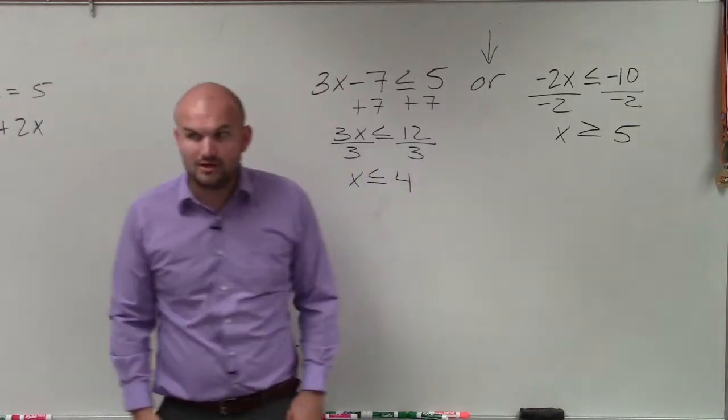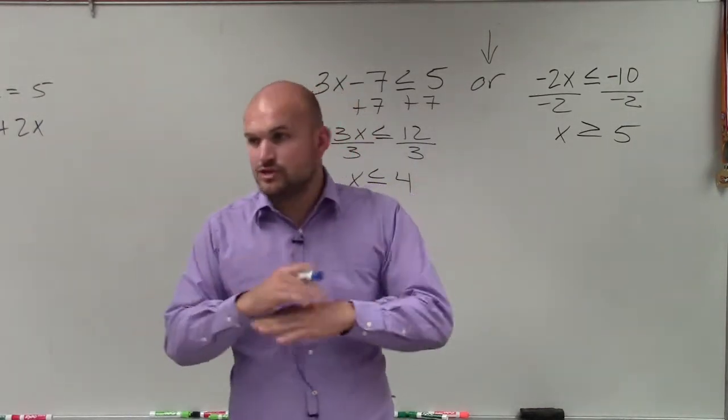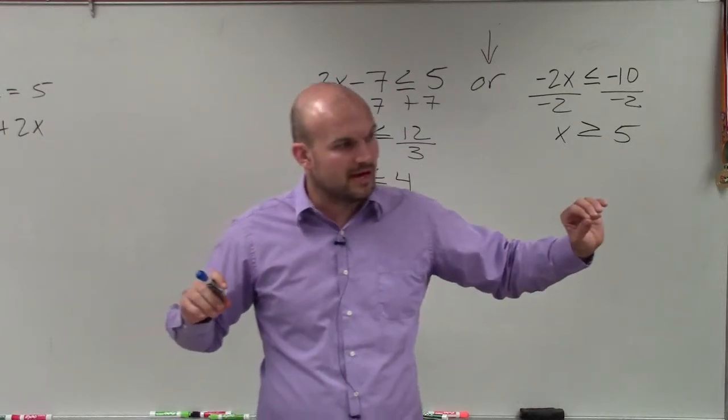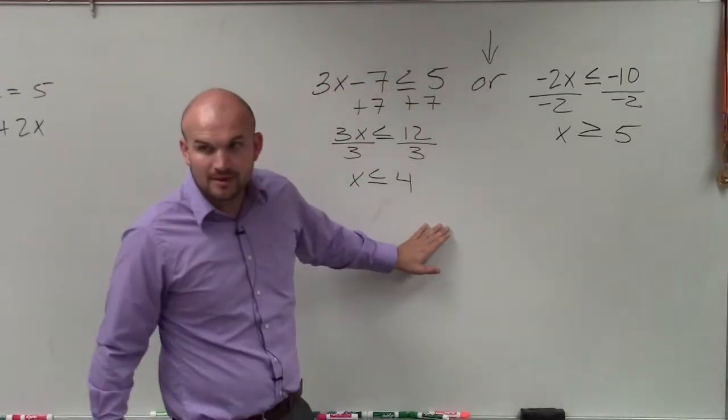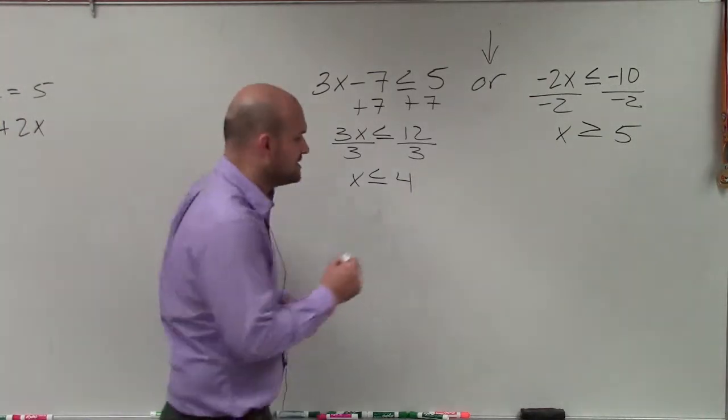Now you guys can see I have two inequalities. Now remember, when we graphed just one variable inequalities, we just graphed one little graph on the number line. Well, now we have two of them. And as long as you have a point that's true for one of them, you're going to want to include both of these on the graph.